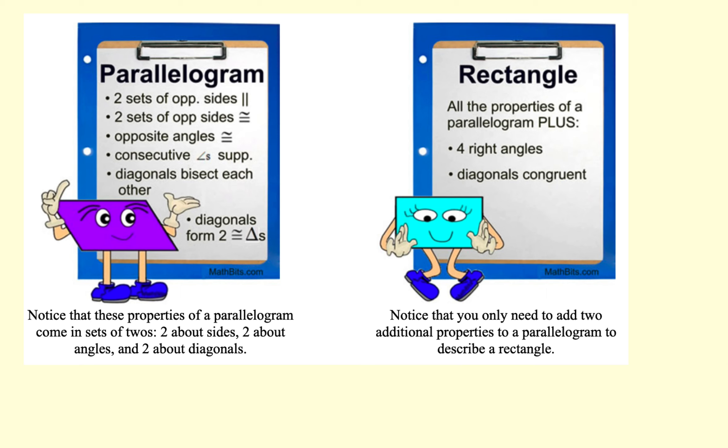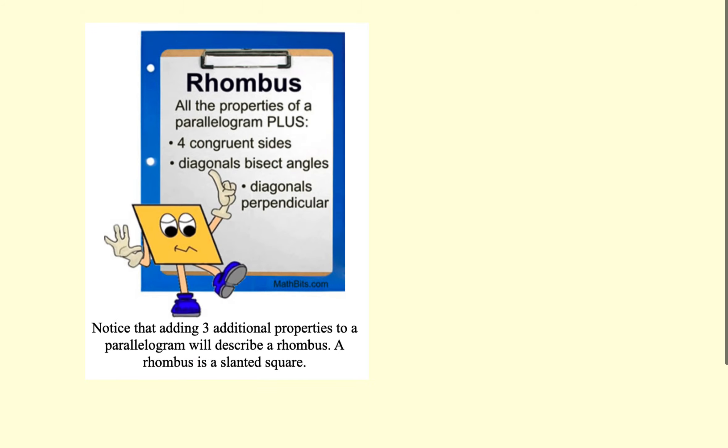Let's take a look at parallelograms, what we first started off with, and we had lots of properties on a parallelogram. Then we worked into a rectangle, and the rectangle has all the properties of a parallelogram, and it has two additional ones. It has four right angles, and the diagonals are congruent.